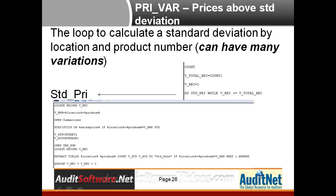In this next test, we're going to calculate a standard deviation for whatever we want. In this case, we're going to do it by customer number, salesperson number, and product number. You have a lot of variations here, and you really could select a lot of different types of fields in this calculation.